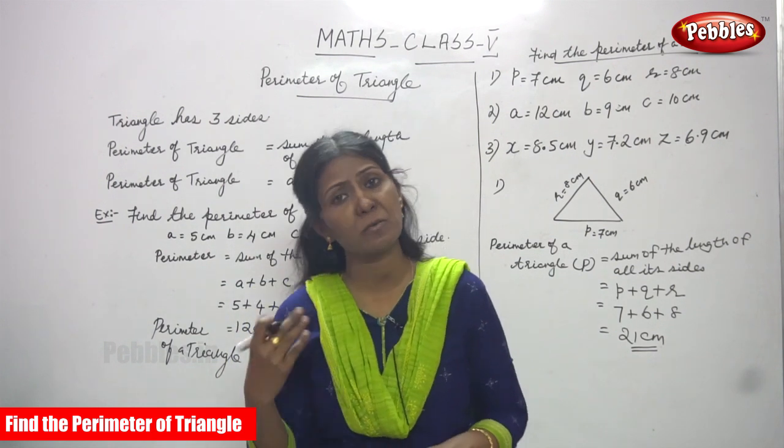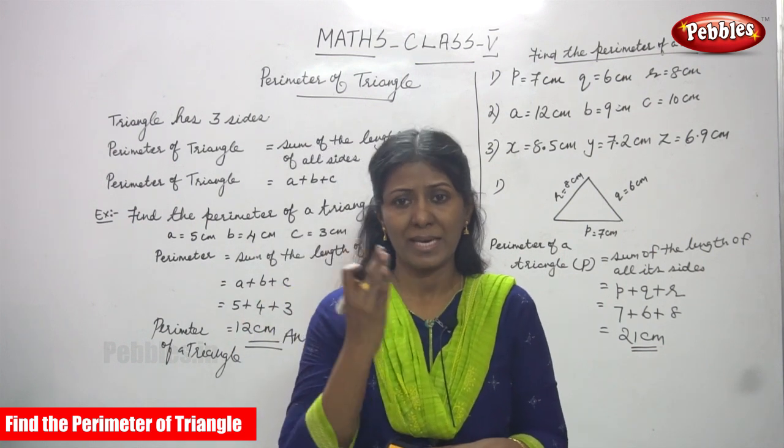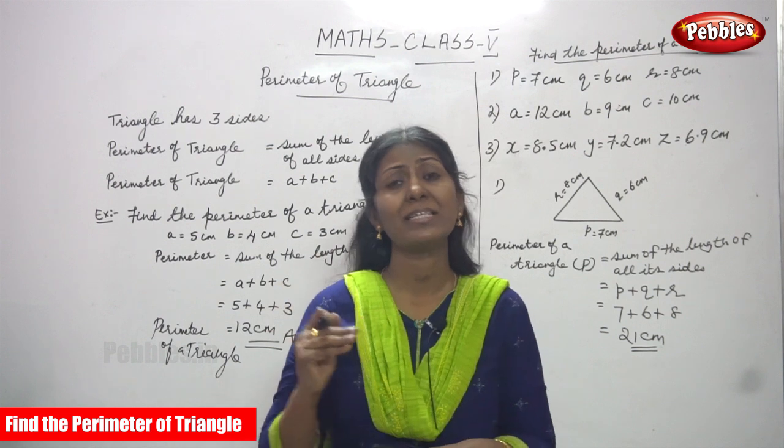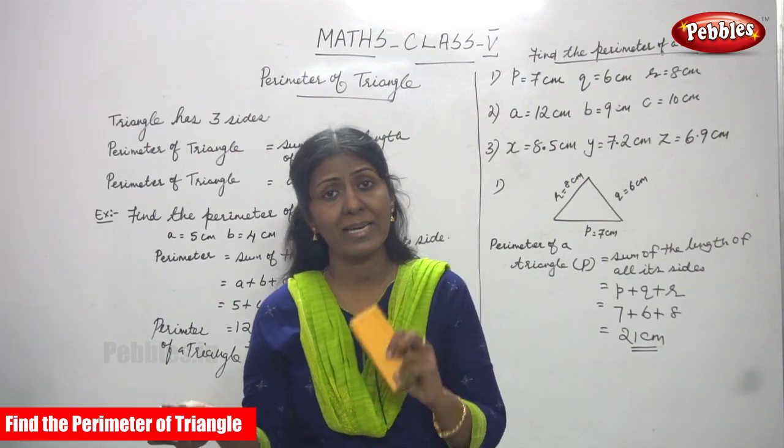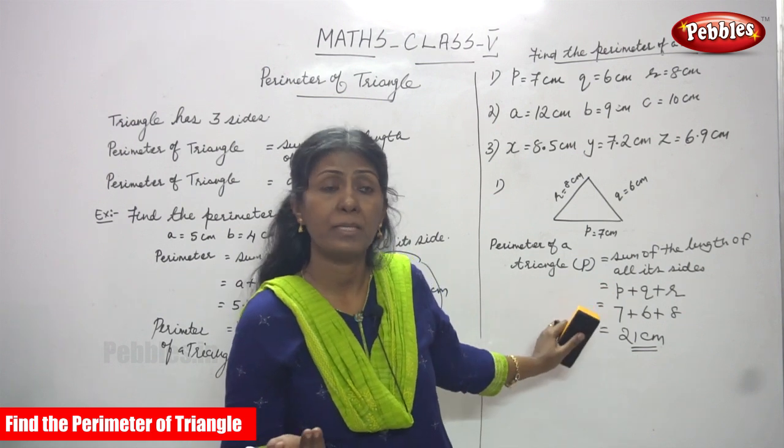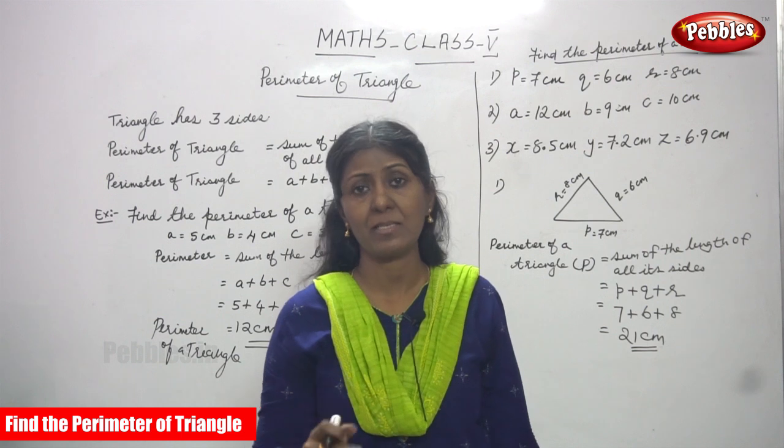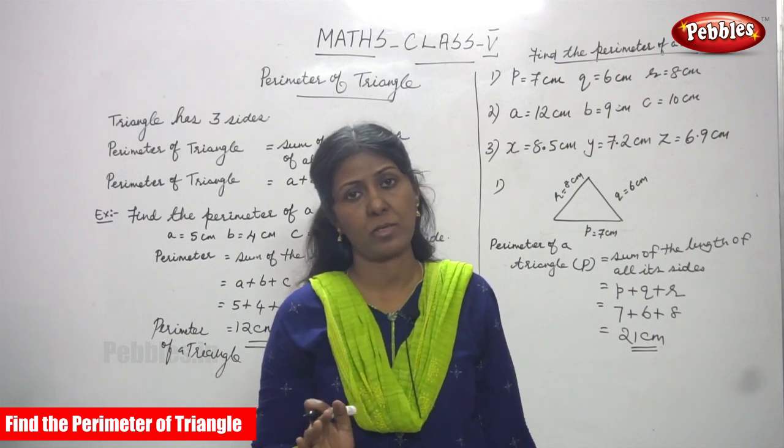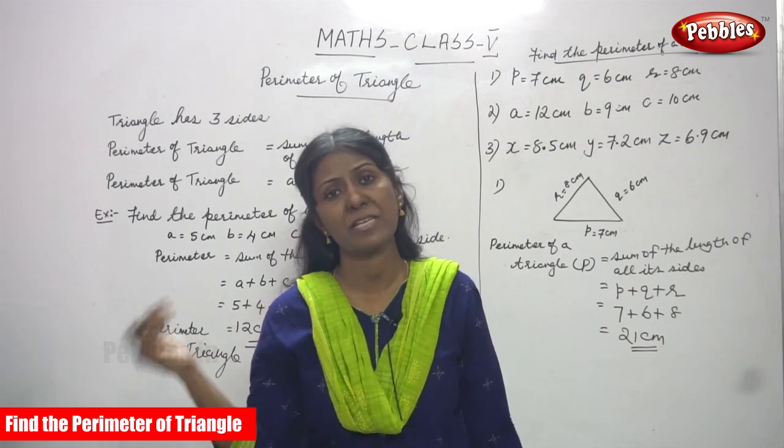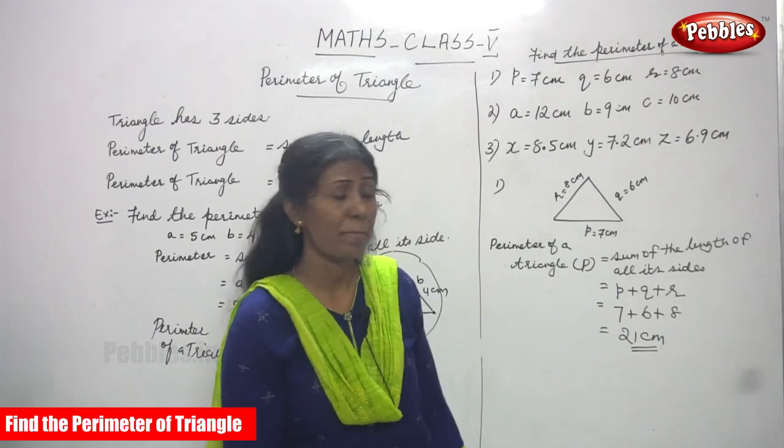Area only we have to use centimeter square or meter square. For the area we have to use centimeter squared or meter squared. But we are using for perimeter, we must use only the centimeter or meter, only the unit as it is, right. Okay, no need to write centimeter square or meter squared. So don't forget to write the units, otherwise they will reduce the marks.